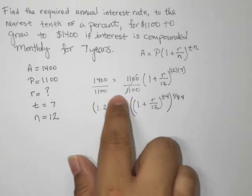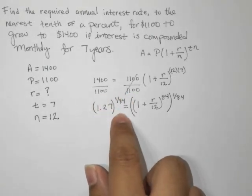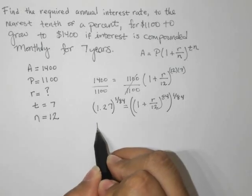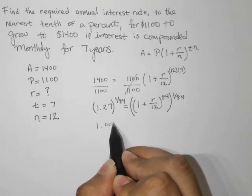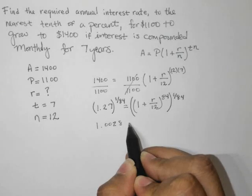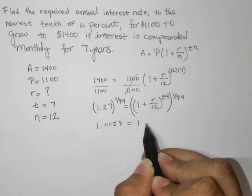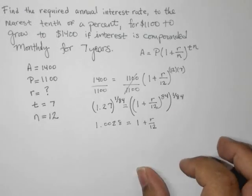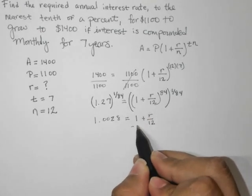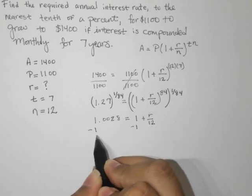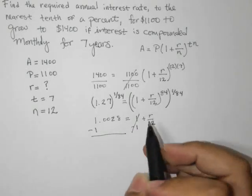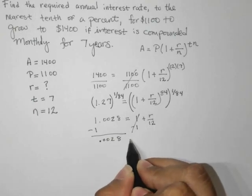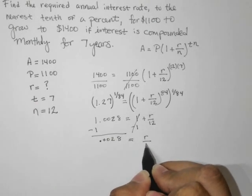Now this right here, you'd have to punch in on your calculator, and you're going to get something that looks like 1.0028, I believe. And it's going to equal 1 plus R over 12. Next thing to do is subtract 1. We subtract 1. This cancels, and here I have 0.0028 equals R divided by 12.